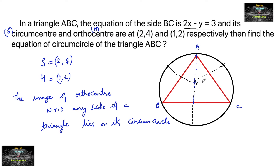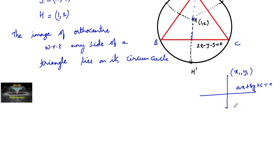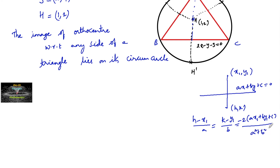Let's find the image of the orthocenter H with respect to side BC. Call this image point H'. The orthocenter is (1, 2) and the line equation is 2x - y - 3 = 0. We use the image formula: for point (x1, y1) with respect to line ax + by + c = 0, we have (h - x1)/a = (k - y1)/b = -2(ax1 + by1 + c) / (a² + b²).